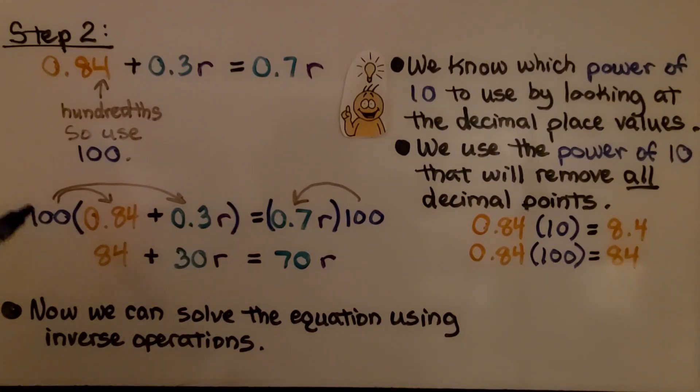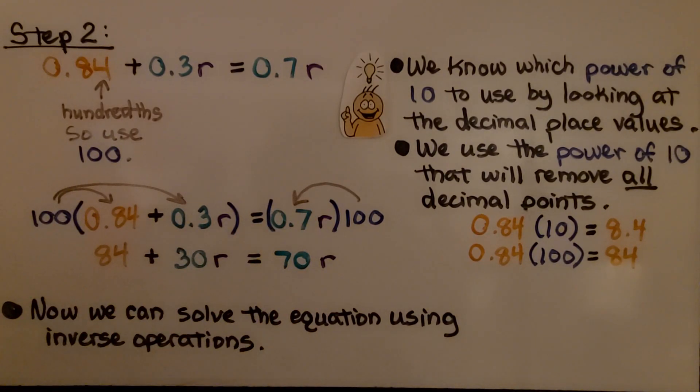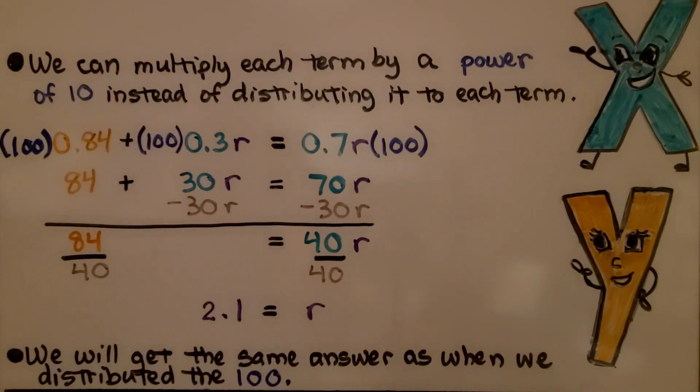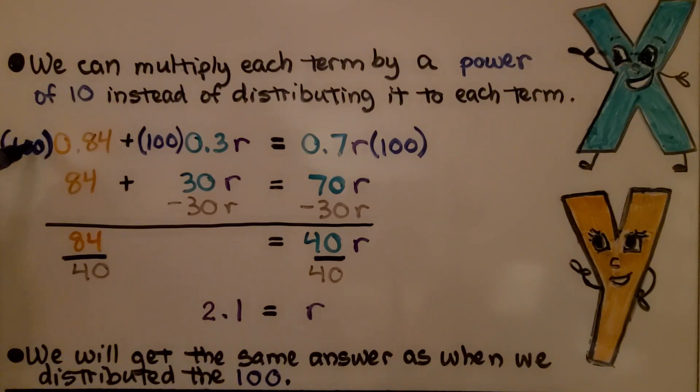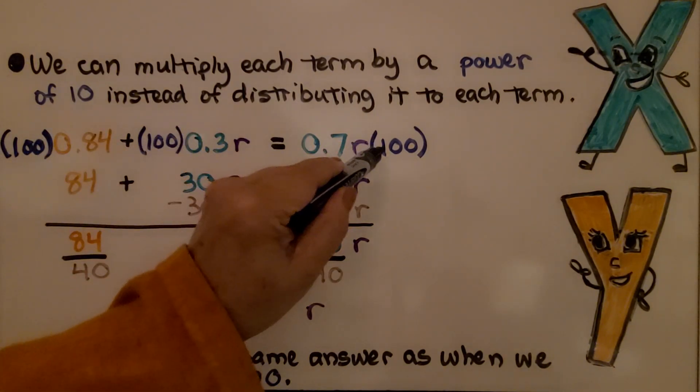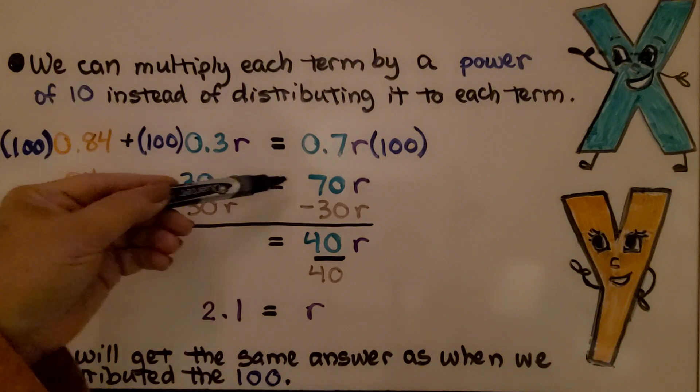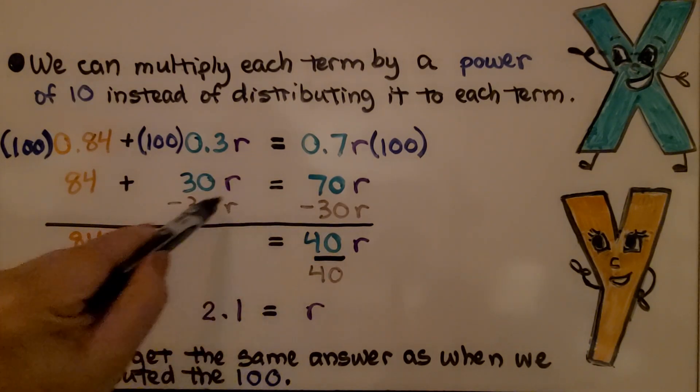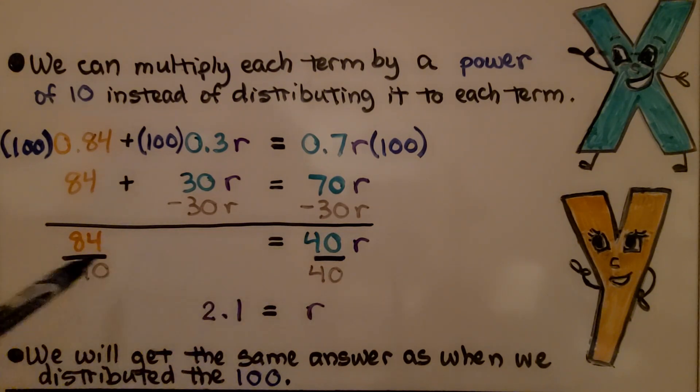Now in step two, we distributed the 100 to both of these terms and to this term. We can multiply each term by a power of 10 instead of distributing it to each term. We can do 0.84 times 100, 0.3 times 100, and 100 times 0.7. And we will still get 84 plus 30r equals 70r. We'll still subtract 30r from both sides and get 84 equals 40r. We'll still divide both sides by the coefficient 40 and get 2.1 equals r. We get the same answer as when we distributed the 100.